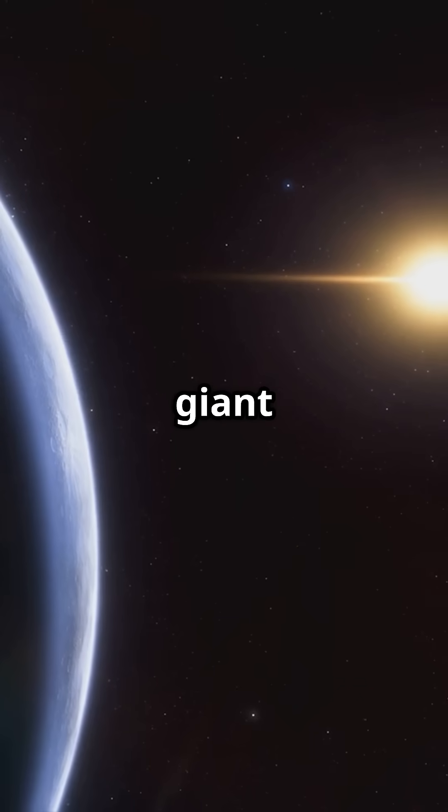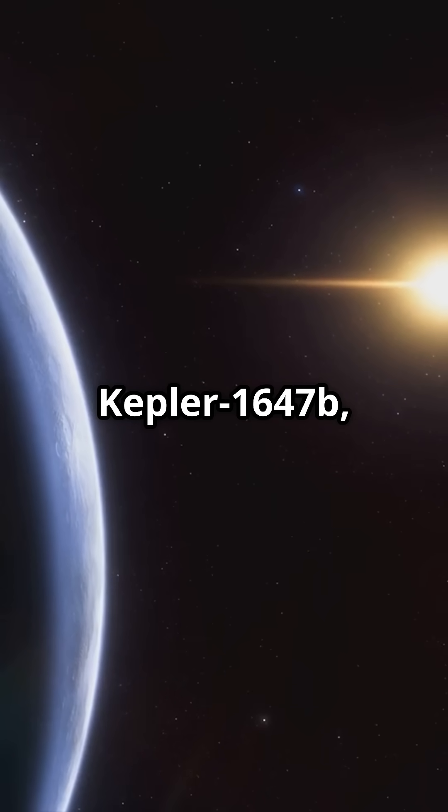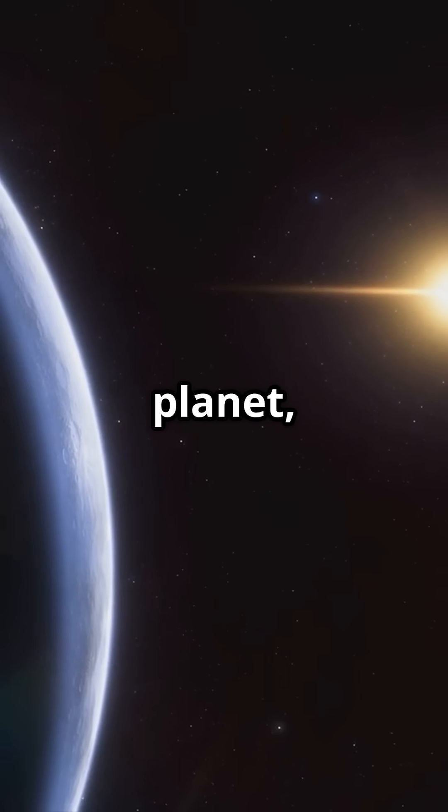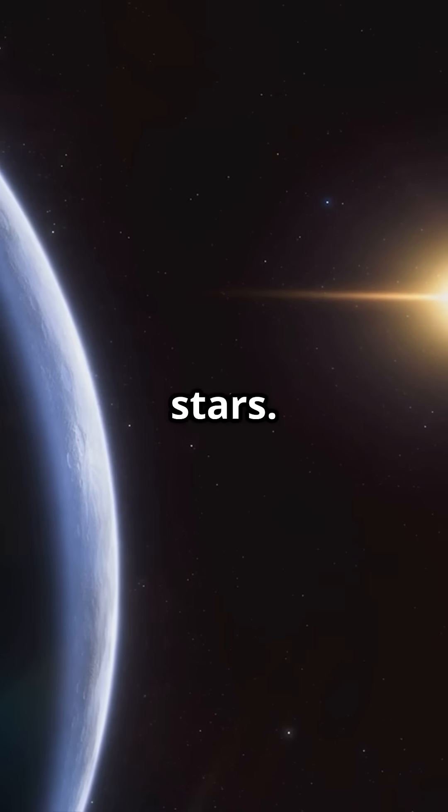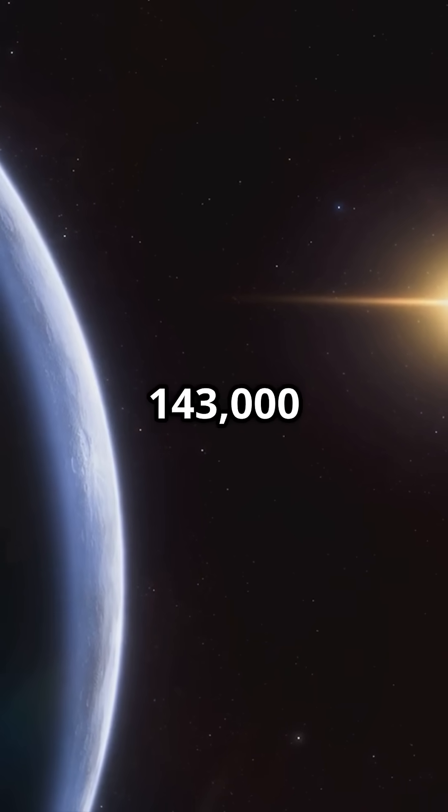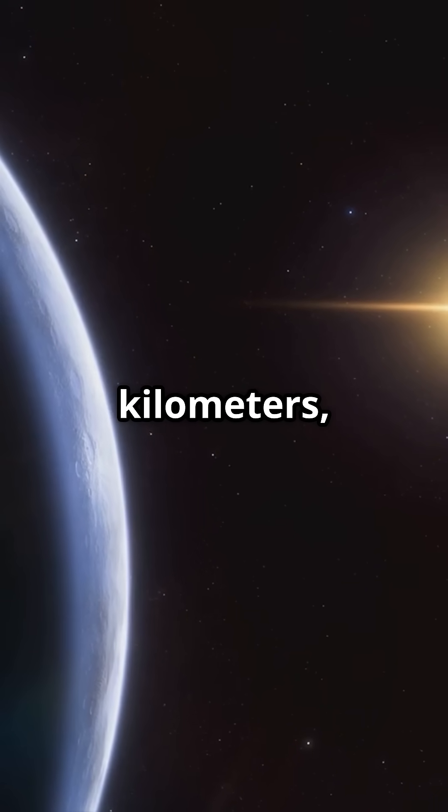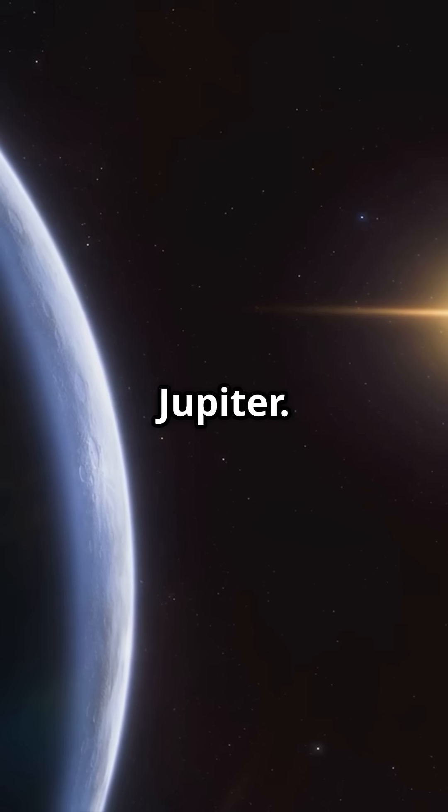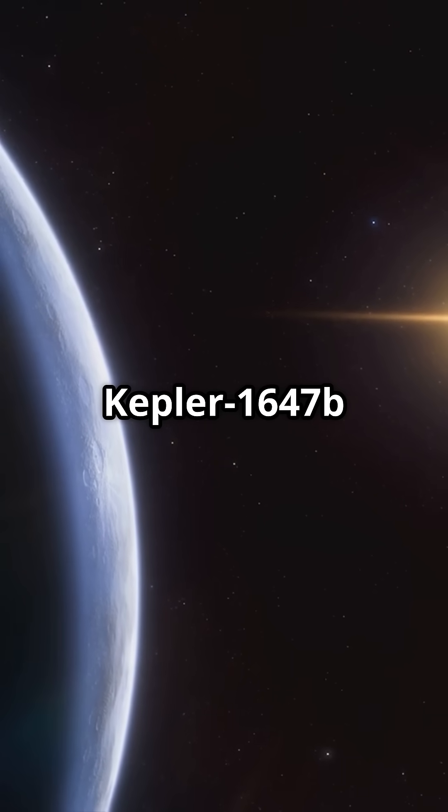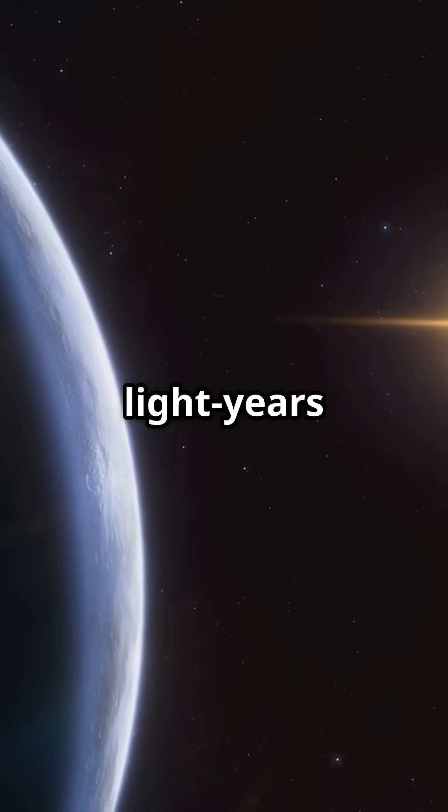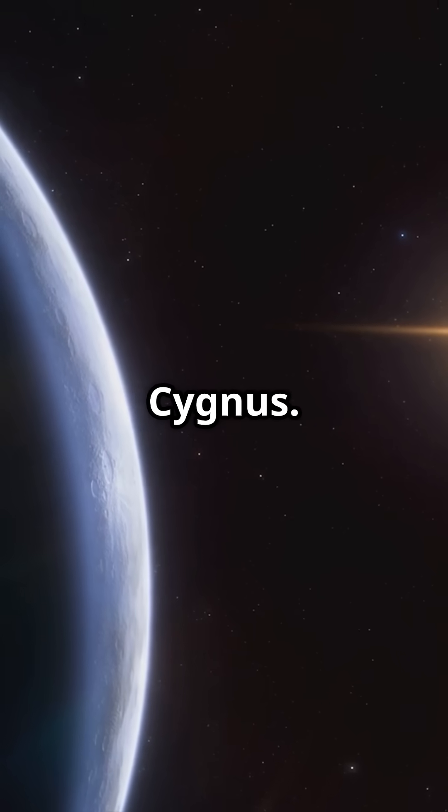Another fascinating giant is Kepler 1647 b, the largest known circumbinary planet, which means it orbits two stars. With a diameter of about 143,000 kilometers, it's similar in size to Jupiter. Kepler 1,647 b is located about 3,700 light-years away in the constellation Cygnus.